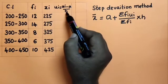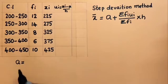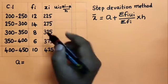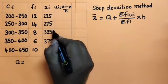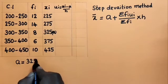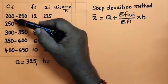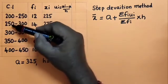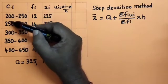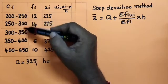We need to find a and h. Here a is the assumed mean — we pick one of the mid values as our assumed mean. In this example, the middle value 325 is taken as a. h is the class length, calculated as 250 − 200 = 50. So h = 50.